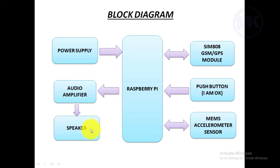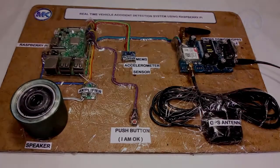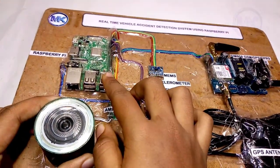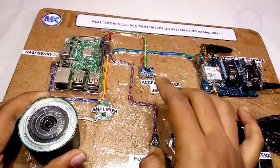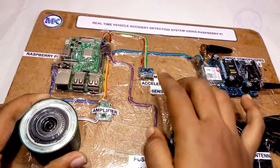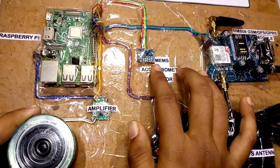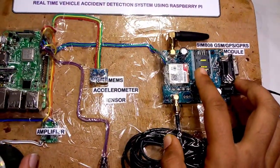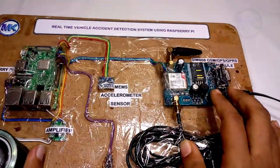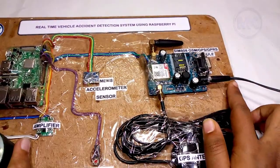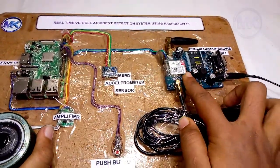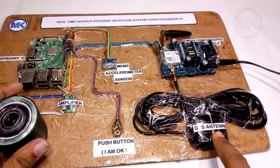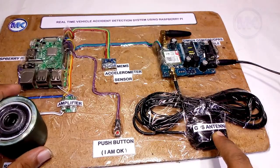Coming to the hardware part, there is the Raspberry Pi as explained previously in the block diagram. There is one MEMS sensor used to detect accidents. There is a SIM808 GSM/GPS module which requires an external power supply of 9 or 12 volts, and it is connected with an external GPS antenna so it receives location data like latitude and longitude.